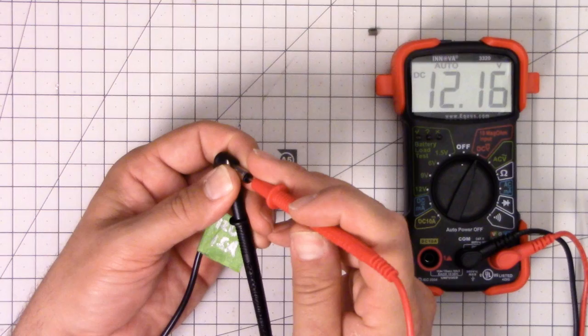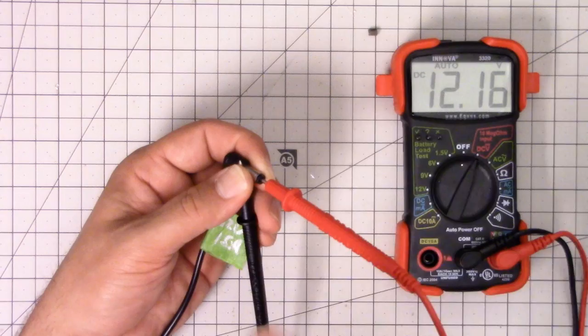Because I get a positive number here, it means that I am correct. The outside is ground and the inside is positive. 12.16 volts. Great.